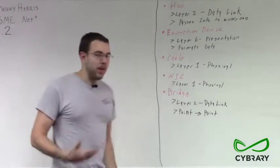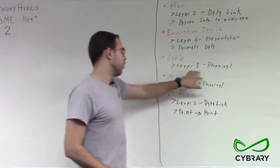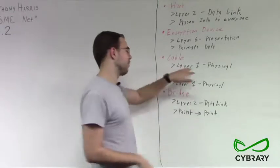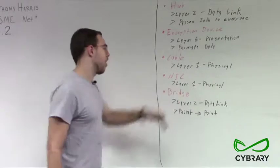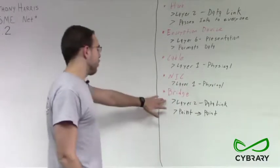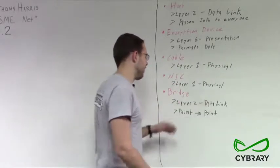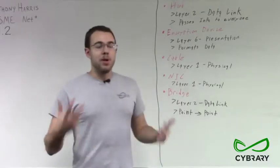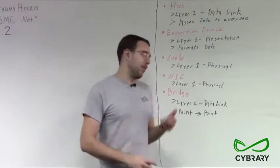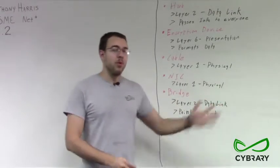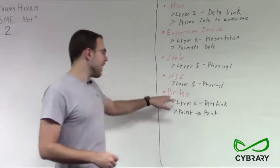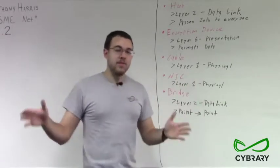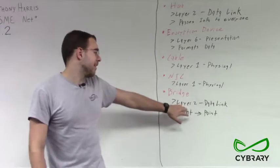Then we have a cable, which is very easy to identify — it's a layer 1 physical device. It's something we can hold, plug in, and connect. A network interface card is also a layer 1 physical device. A bridge is going to be a layer 2 data link device. A bridge is considered layer 2 because it provides point-to-point connectivity, whether it's through a wireless bridge set up from one point to another or an ethernet bridge. A bridge provides connectivity from one point to another — much like a physical bridge — so it's a layer 2 device.